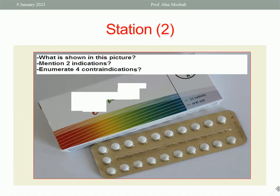Let us go to Station 2. What is shown in this picture? Mention two indications and enumerate four contraindications. As you see, this is COC — combined oral contraceptive pills — monophasic. I said monophasic because all the pills are the same size and color, containing the same dose of estrogen and progesterone.